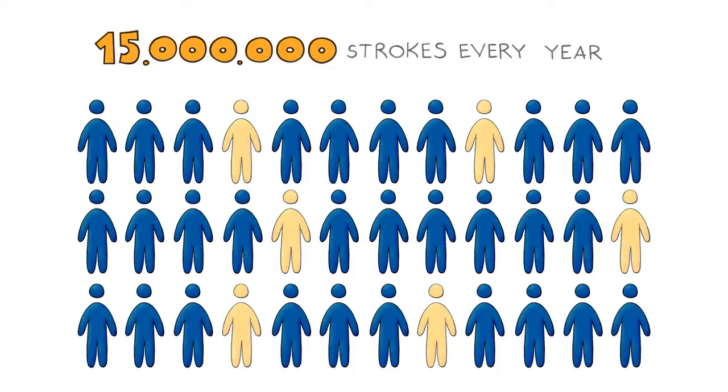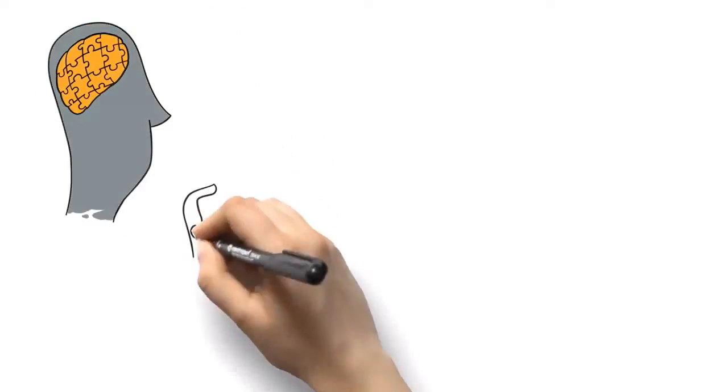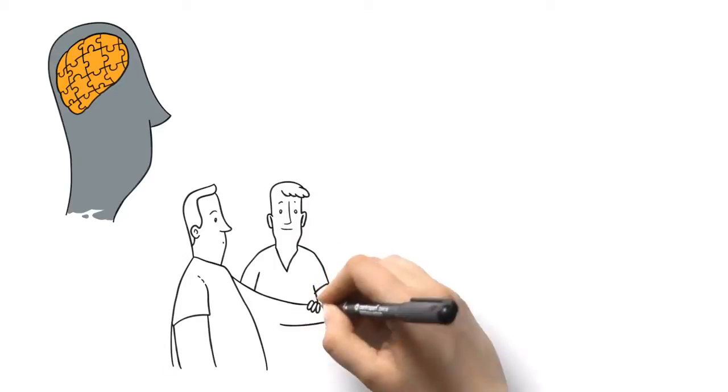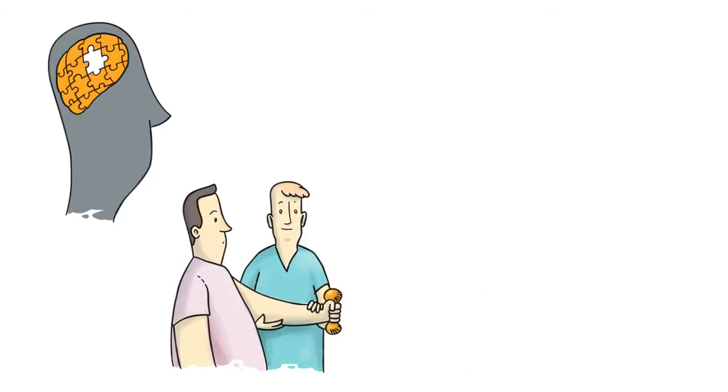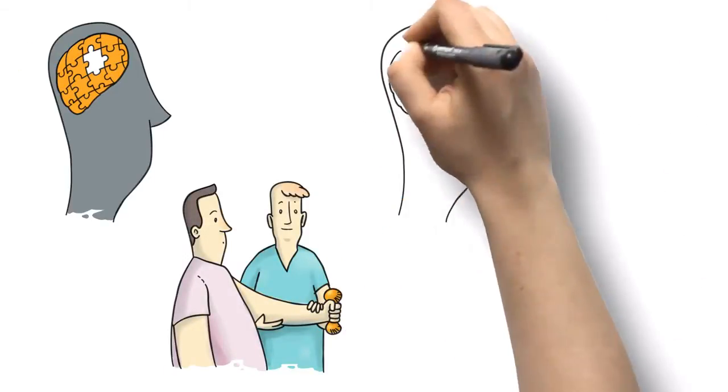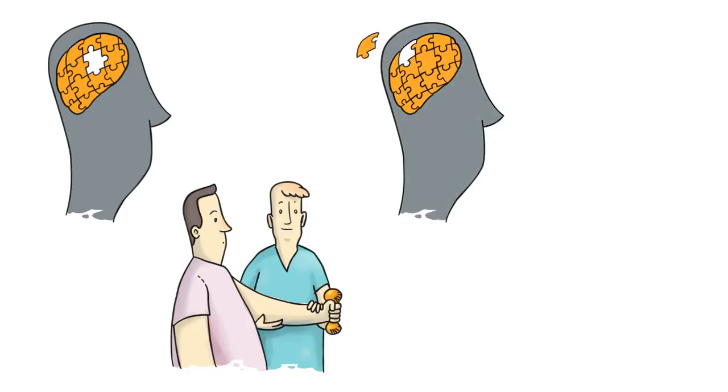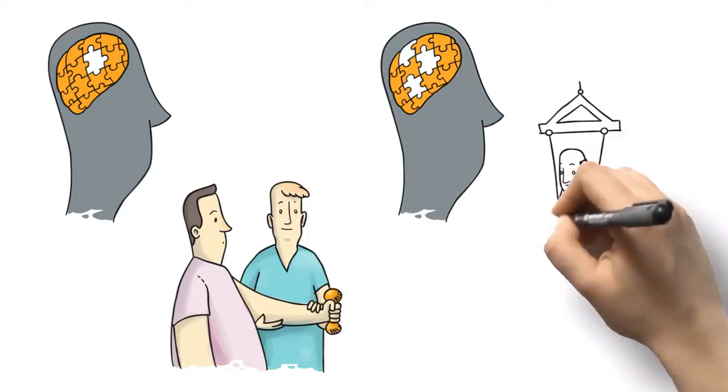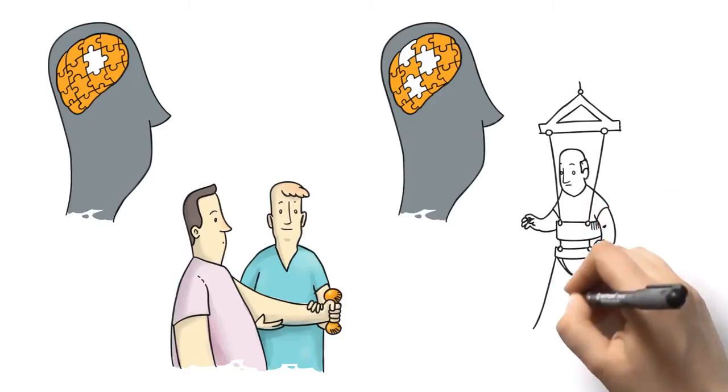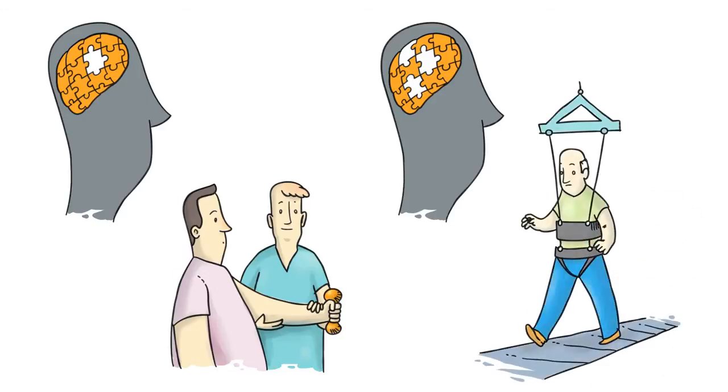While full recovery is possible, many survivors end up having some type of disability. Depending on where one's brain is damaged, a person may have less serious weakness or spasticity of a limb. But for most survivors, stroke rehabilitation is a long-term process lasting months and even years. This was Sam's case and he needed to relearn to use his impaired hand.